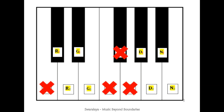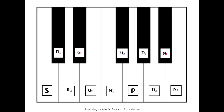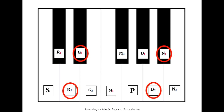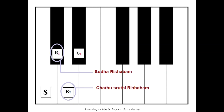The other notes — Ri, Ga, Da, and Ni — are sharing one of their frequencies with the neighboring note. So what is a Vivadi Swara? At this point we all know that there are 12 Swarasthanas, or 12 placements of notes, in Carnatic music. Vivadi Swara is just a theoretical representation of the sharing frequencies of Ri, Ga, Da, and Ni. So if you add these four notes, we get 16 Swarasthanas in Carnatic music.